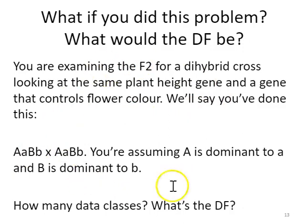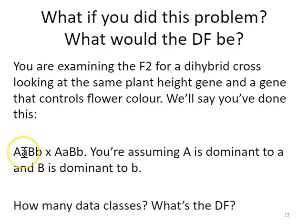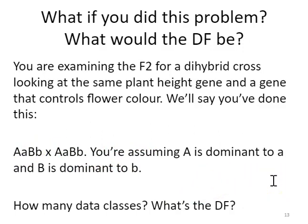So we threw another trait in — we weren't just tracking plant height, but also flower color. We said there's an A gene for height and a B gene for flower color on the same plant, and this is the heterozygote. Instead of a test cross, you look at the F2, which you get by mating the two F1s. You would expect in the F2 generation to see a nine-to-three-to-three-to-one phenotype ratio with four different phenotypes — so three degrees of freedom for the chi-squared calculation.